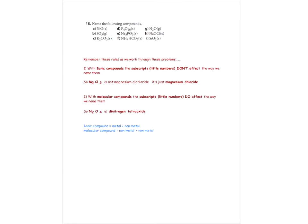With molecular compounds, the subscripts do affect the way we name them. So when we have something like N2O4, this is dinitrogen tetraoxide. We need to remember that important distinction. Again: ionic compounds are metal plus nonmetal; molecular compounds are nonmetal plus nonmetal.